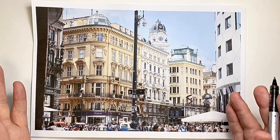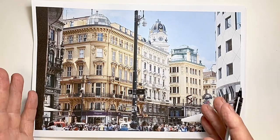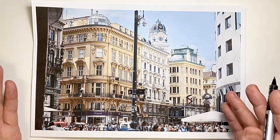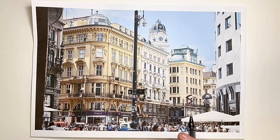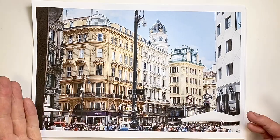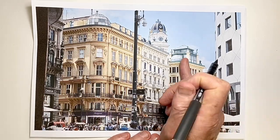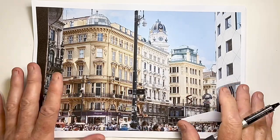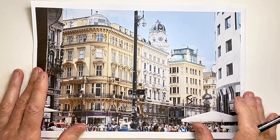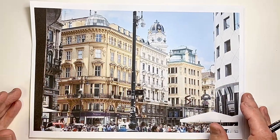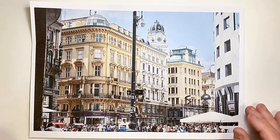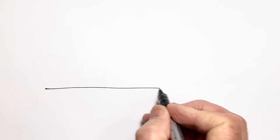In this video, we're looking at how perspective works when we look at a building from a corner, such as in this view. Here's a corner of this building, and here's a corner of this building. How does perspective work in this situation? Well, we'll start with a simpler version than this Vienna street scene. As always, the first thing to do is to consider the eye level.